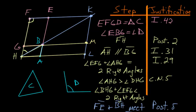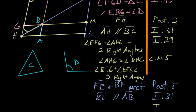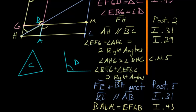Now notice that we have this big parallelogram FKHL with diameter HK, which essentially bisects it. By Book 1 Proposition 43, the complements about the diameter are equal to each other. So parallelogram BALM is equal to parallelogram EFGB.